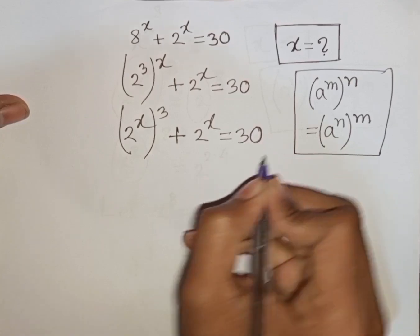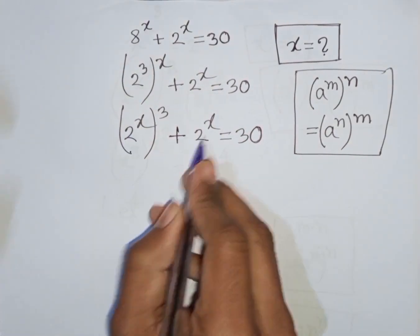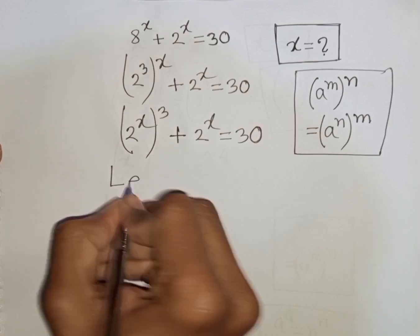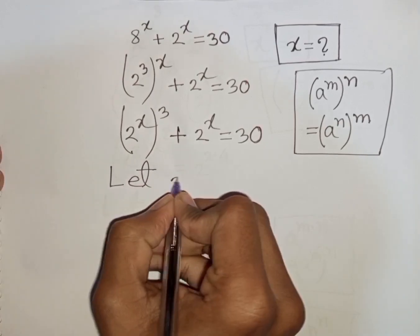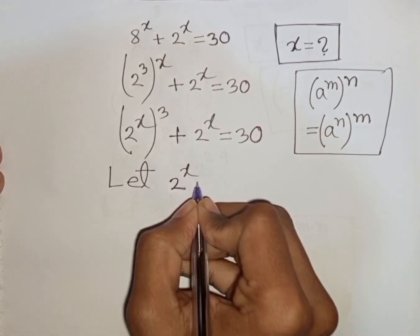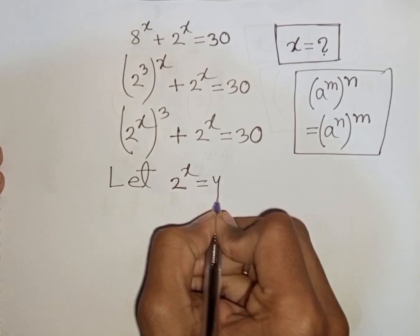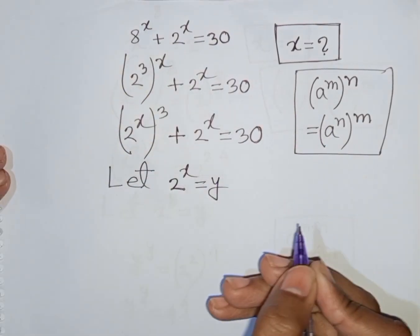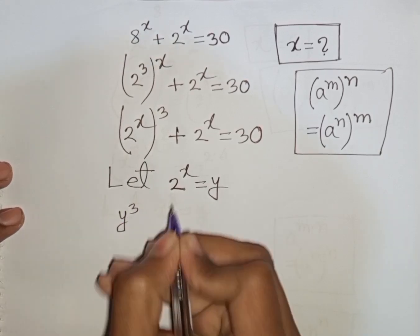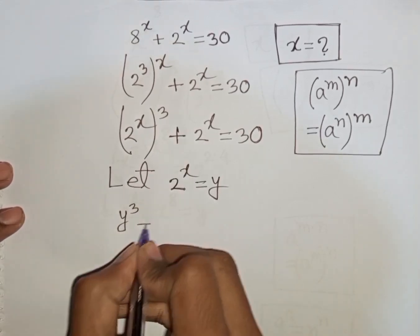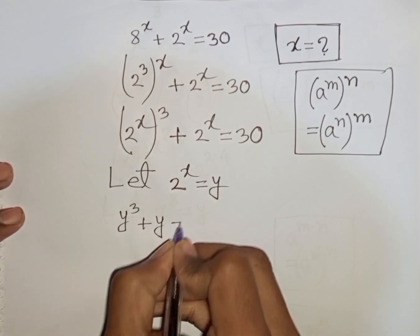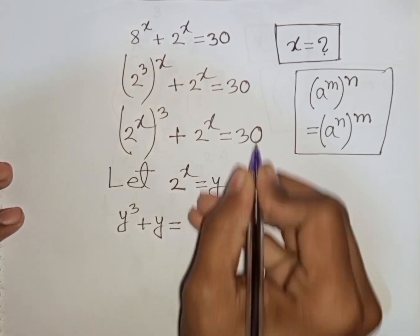Now we see 2 power x and 2 power x — both terms are the same. So let 2 power x be substituted by y. So our equation will be y cubed plus y is equal to 30.